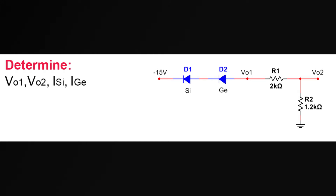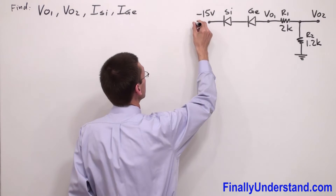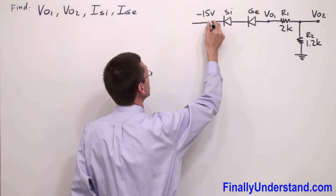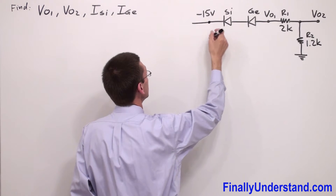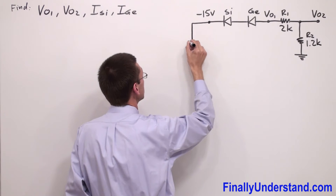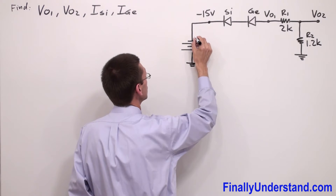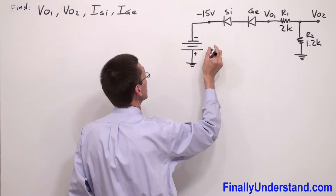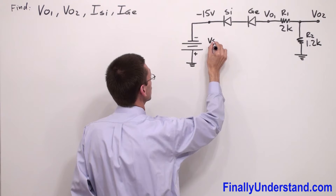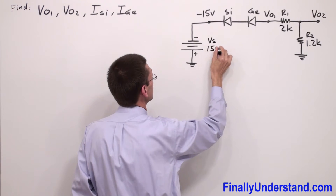Let's take a look at this example. We are going to redraw the circuit first. Please notice that this time we have written negative 15 volts. It means that the power supply is connected to the cathode of the silicon diode by the negative terminal. So this is the negative terminal, this is the positive terminal, and this is my voltage source which has 15 volts.